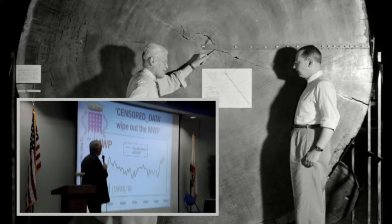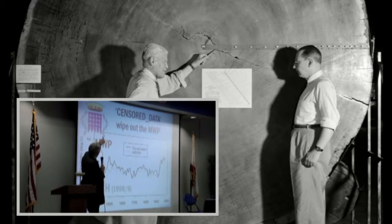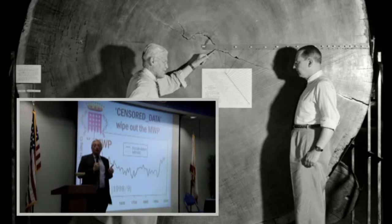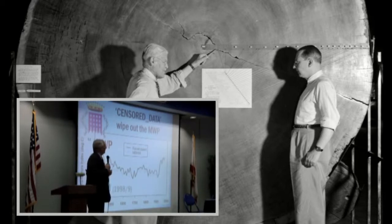And we know that they did this because they archived those 20 in a separate file called censored data. So they knew that their result depended on 20 anomalous records. Did they say that in the papers they wrote up in Nature, on the basis of which the IPCC's graph was drawn? No, they did not.